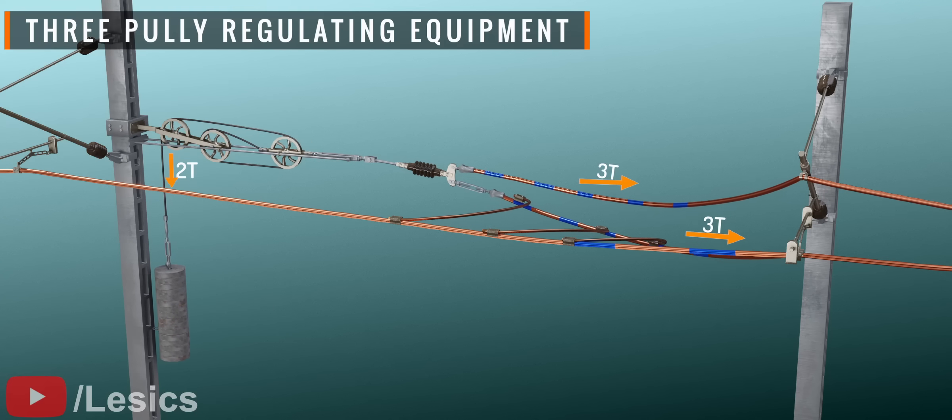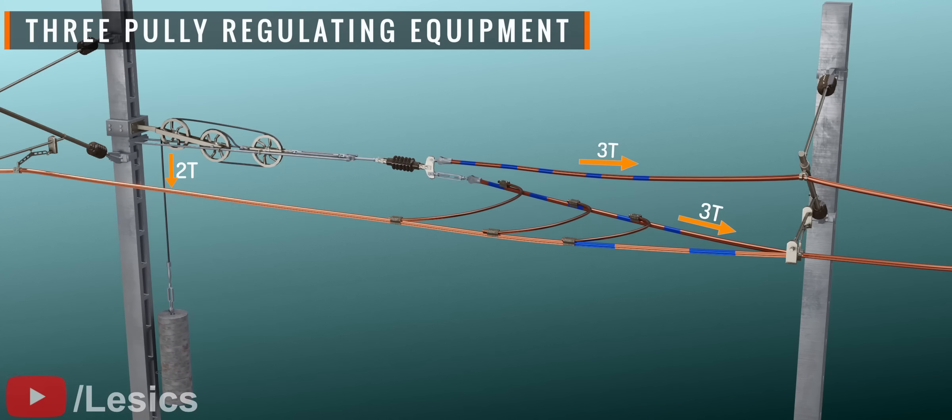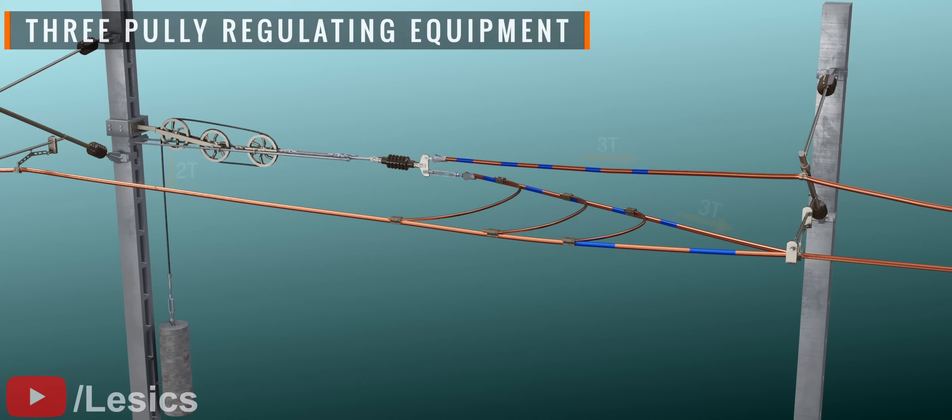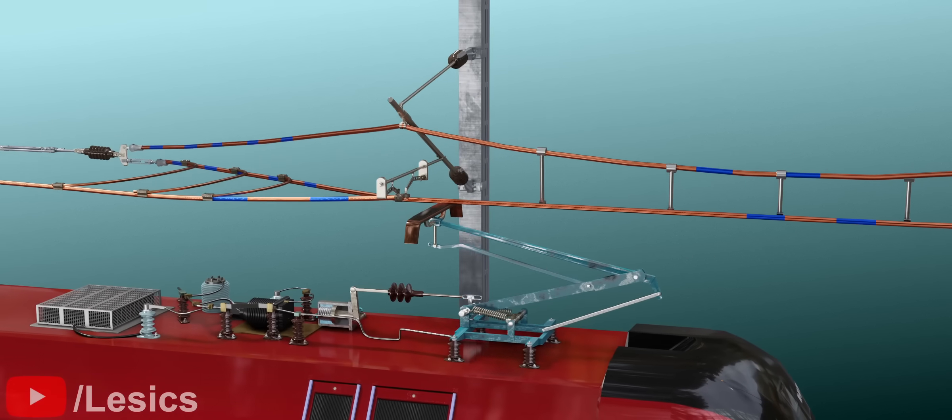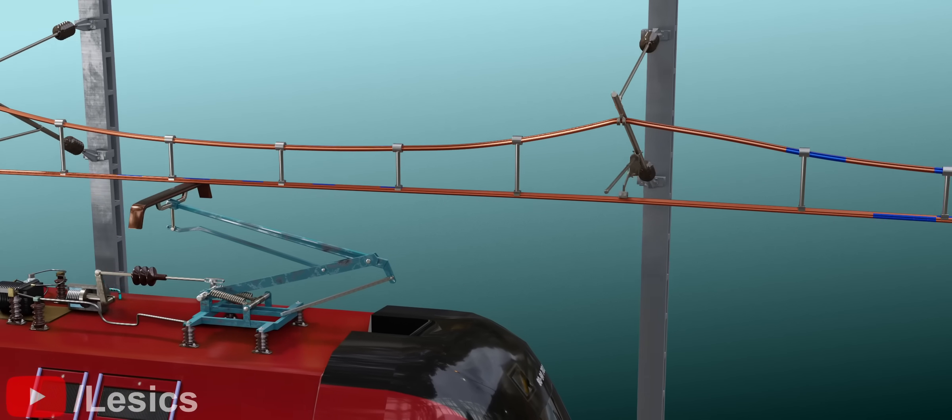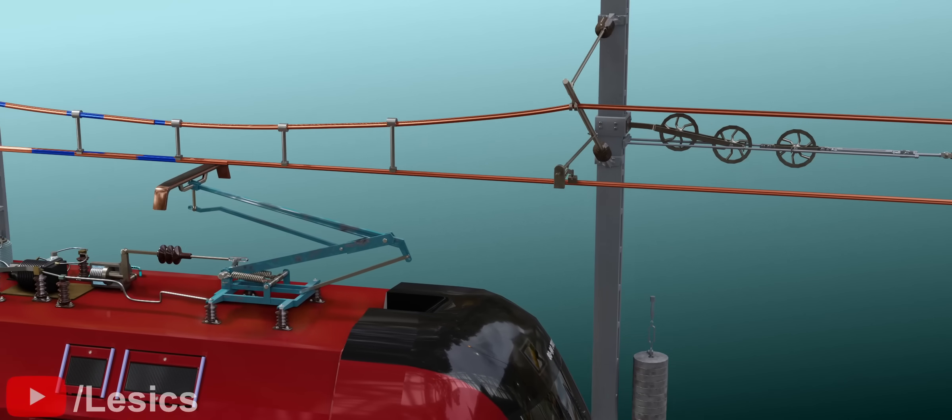Let's implement a clever pulley arrangement that provides an immense mechanical advantage. A 2N force at the pulley gives 3N of tension in each wire. As you can see now, the contact wire is almost straight. With this system, the pantograph always remains in contact with the contact wire.